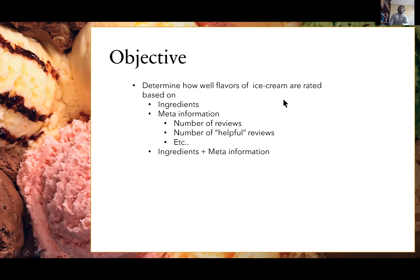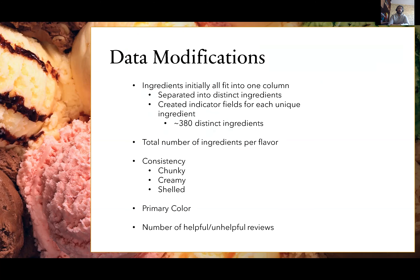My initial objective was to determine the ratings of flavors based on ingredients. For comparison, I also wanted to see if I could get a decent rating prediction based on meta information such as number of reviews, number of helpful or unhelpful reviews. Third, I tried a combination of ingredients and meta information. I did make some modifications to the data — nothing like changing anything present — but this ended up taking a lot of my time.